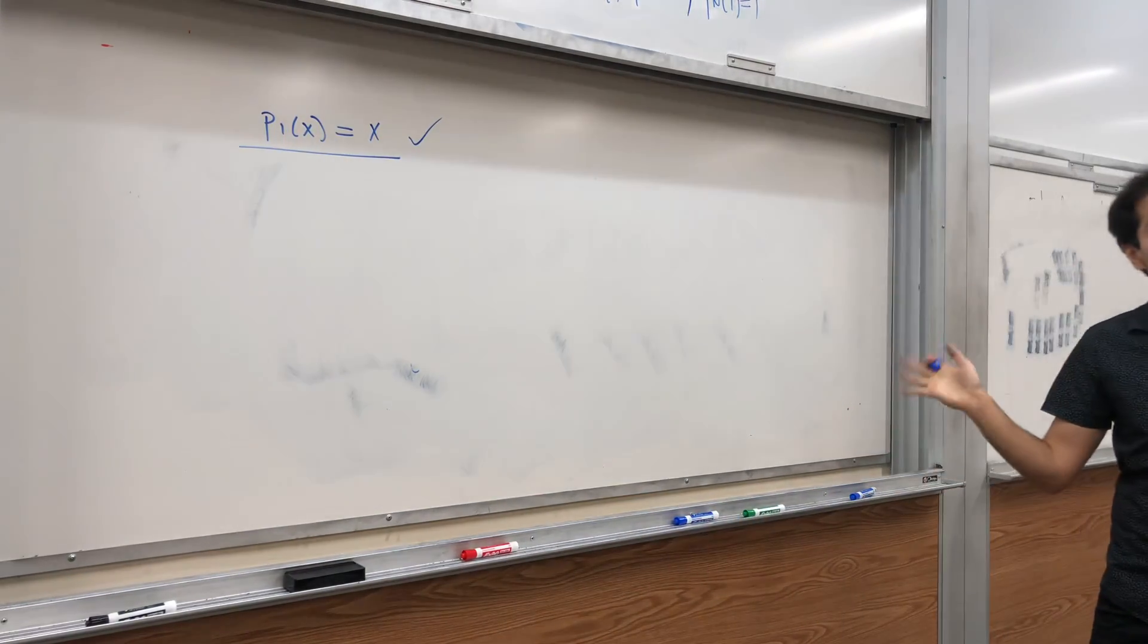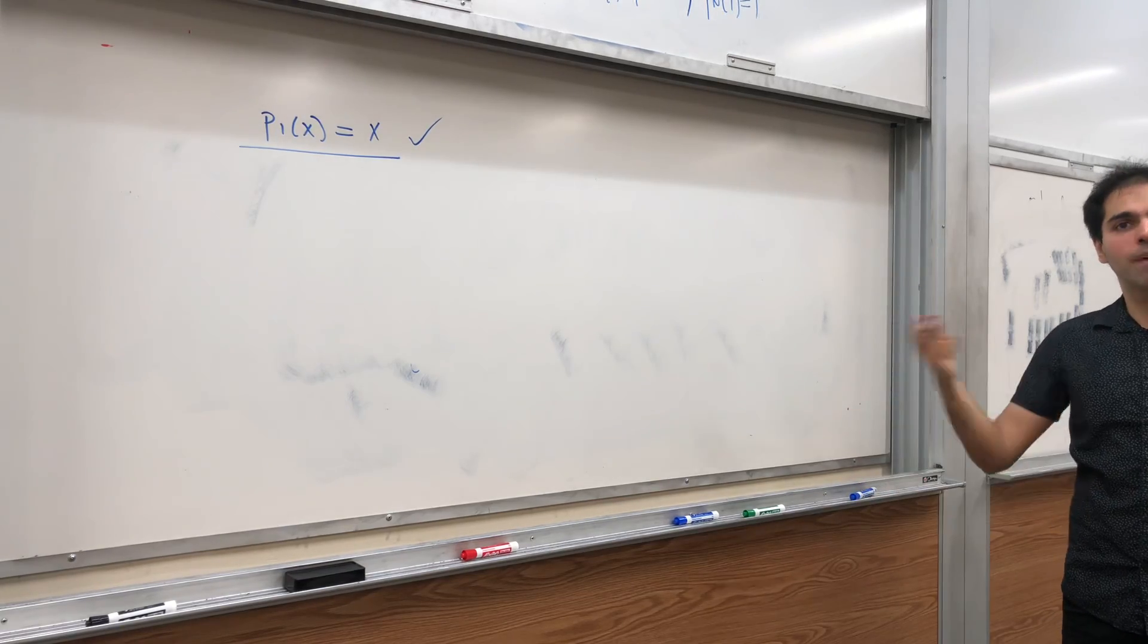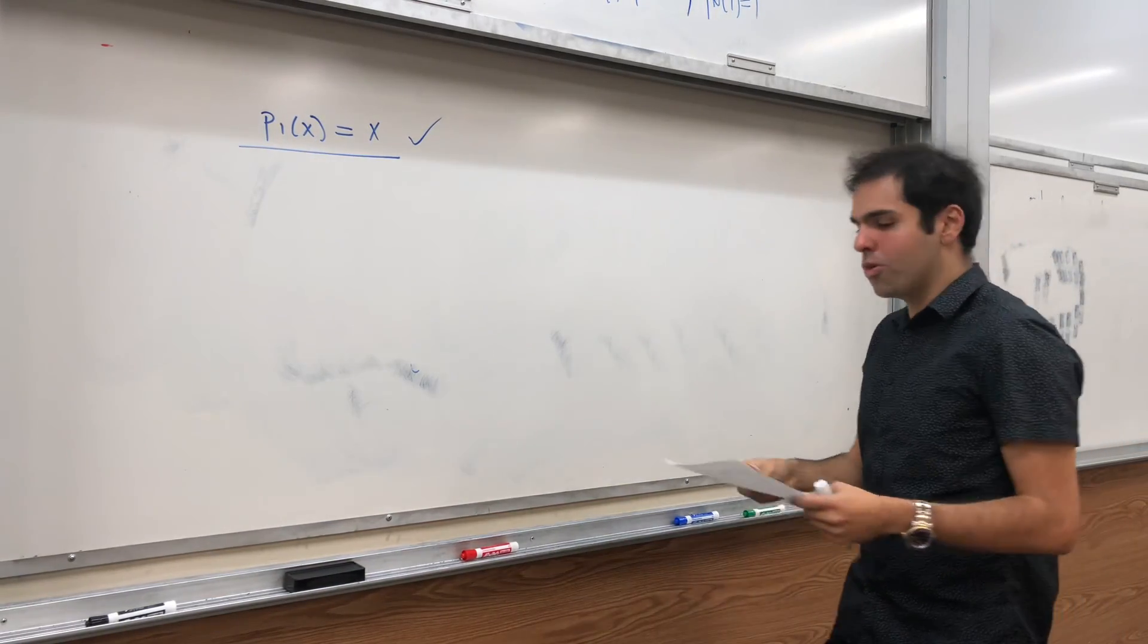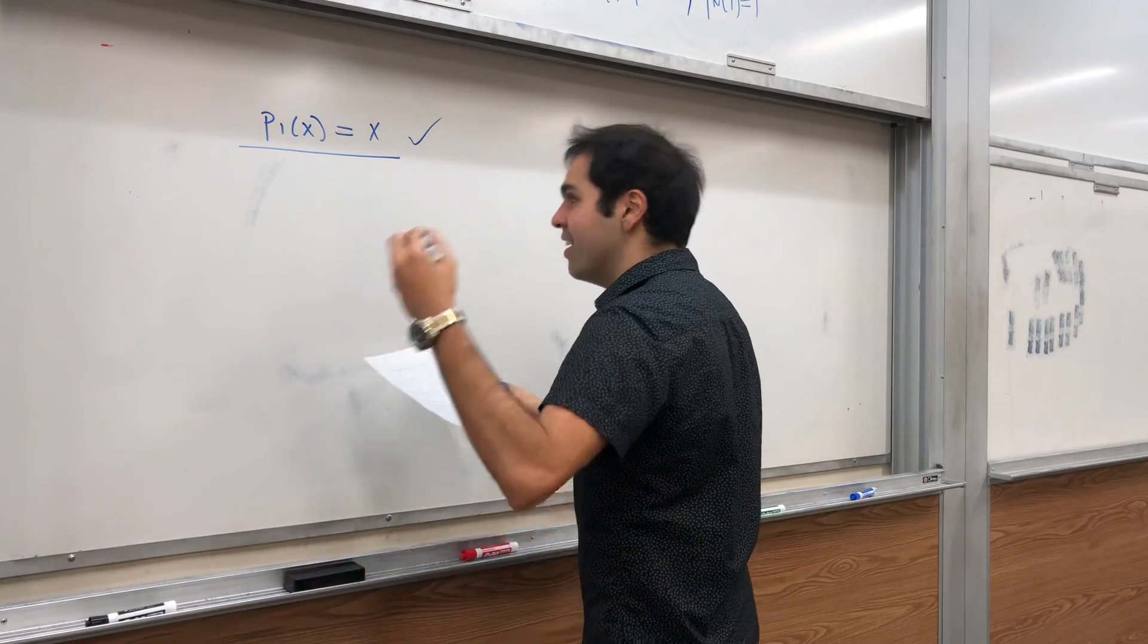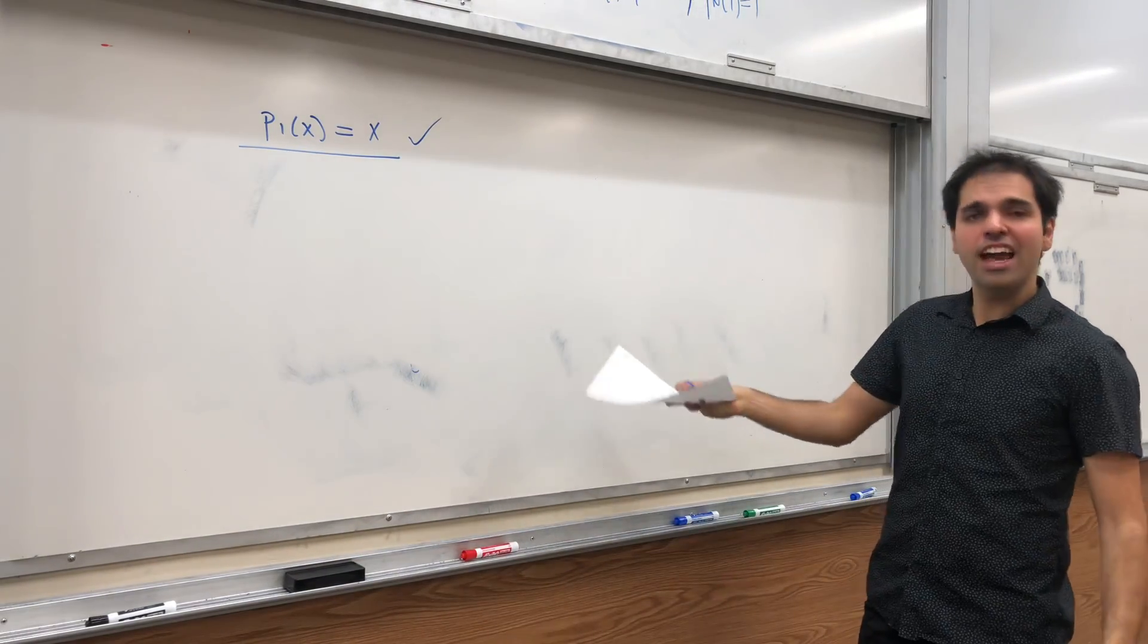If you evaluate x at 1, you do get 1. So P1 of x is just x in this case. If it's not 1, then you just multiply it by a constant to make it 1. This is what's called the normalization.